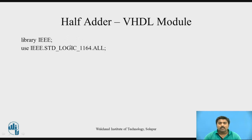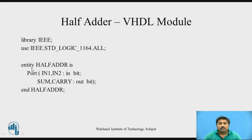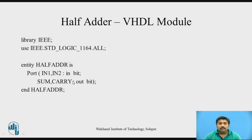These two lines are compulsory, and after that comes the entity part. The entity syntax is: use the keyword 'entity', then the entity name, then 'is', followed by the port declaration where you mention inputs and outputs and their types. For the half adder, IN1 and IN2 are inputs with mode 'in' and type 'bit'. Outputs are sum and carry with mode 'out' and type 'bit'. Then you end the entity using the 'end' keyword followed by the same entity name.